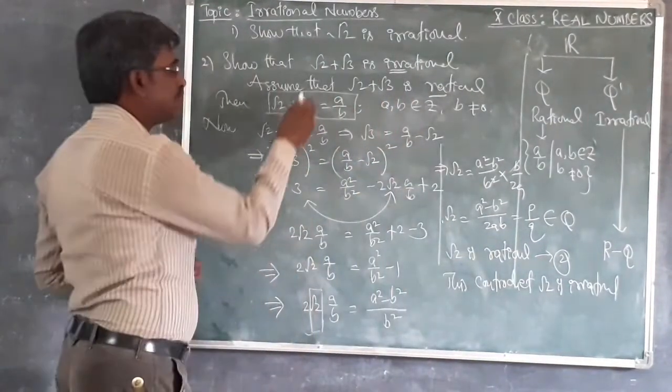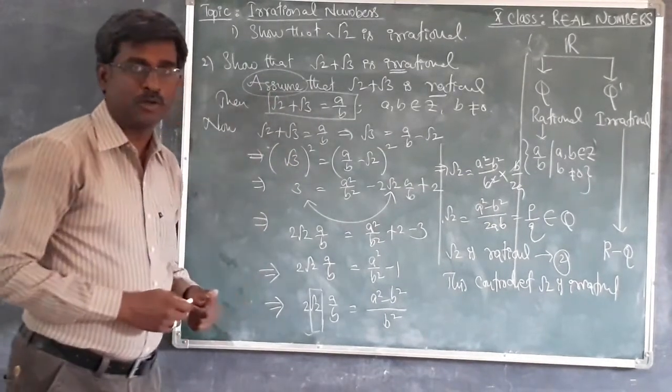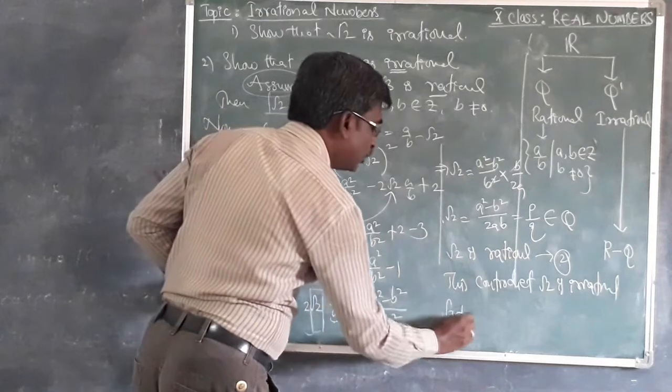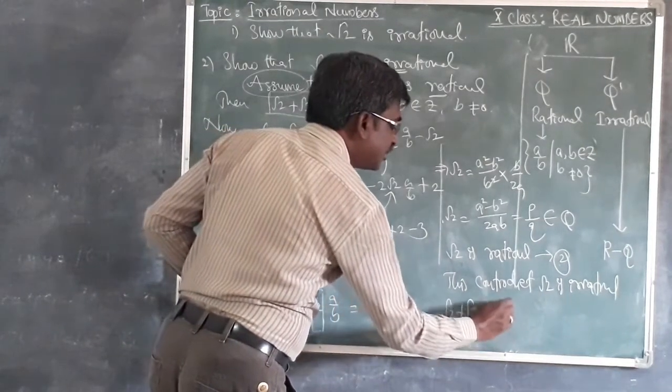So that means our result is wrong or false. So that means finally conclude that root 2 plus root 3 is irrational.